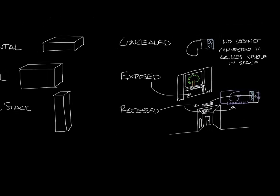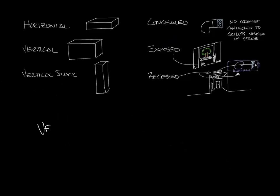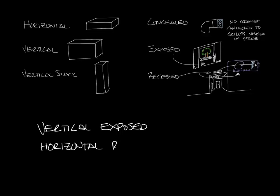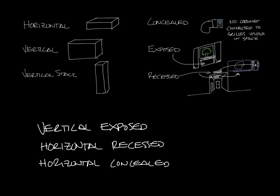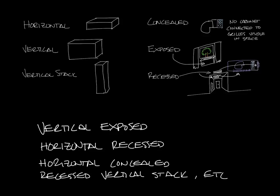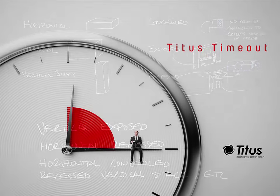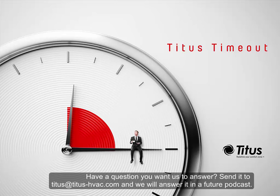Putting it all together, you can have vertical exposed fan coils, horizontal recessed fan coils, horizontal concealed fan coils, or recessed vertical stack fan coils recessed into the corner of your hotel room — and so on. Which one you use depends on where and how you want to install them in the space. Don't forget to subscribe to our YouTube channel, and thanks for taking the time out with us.